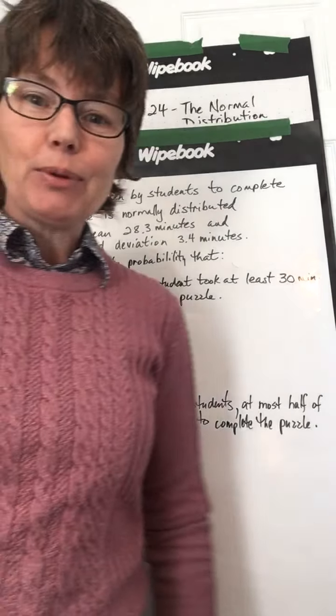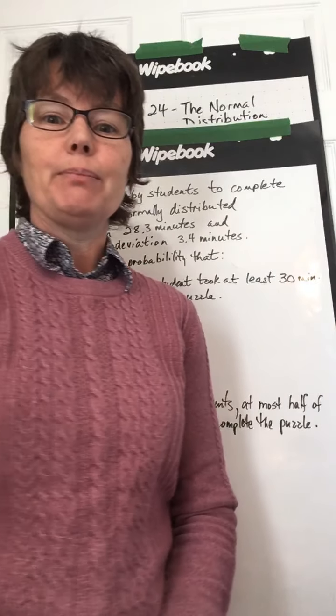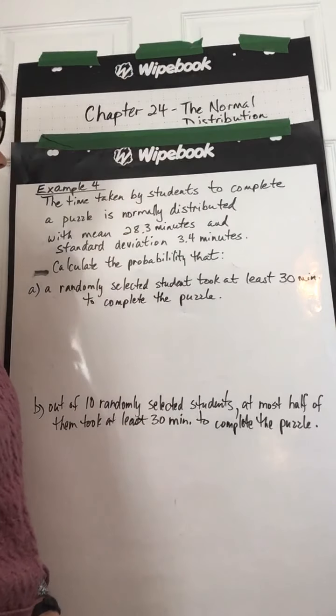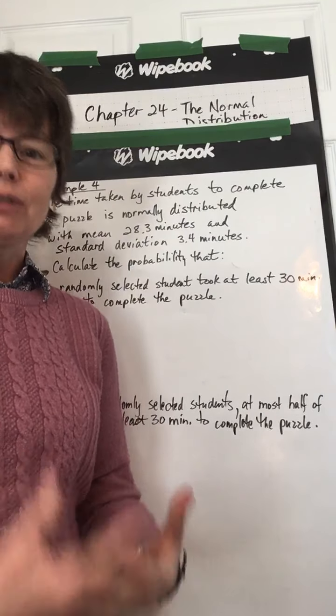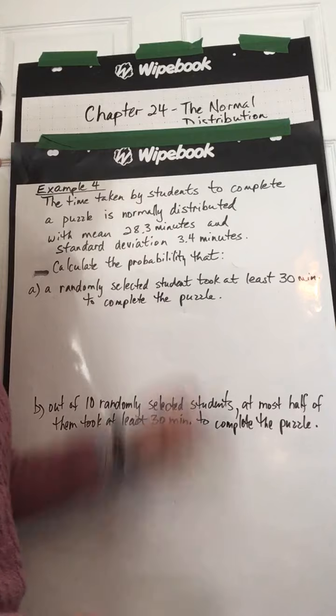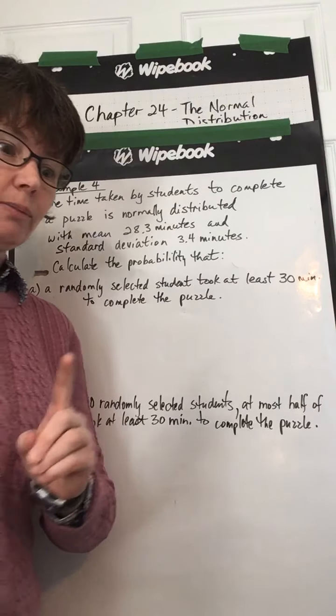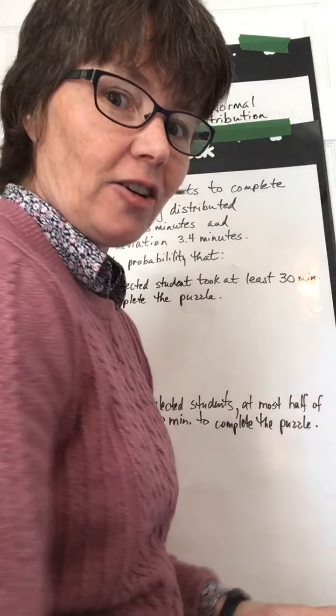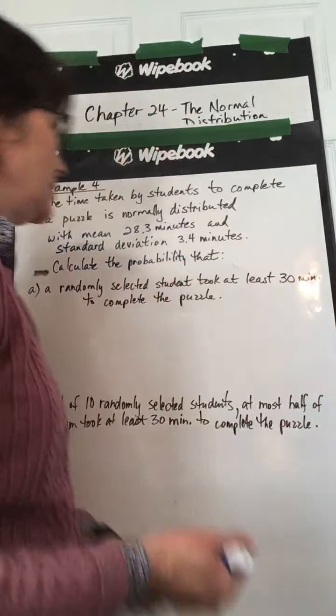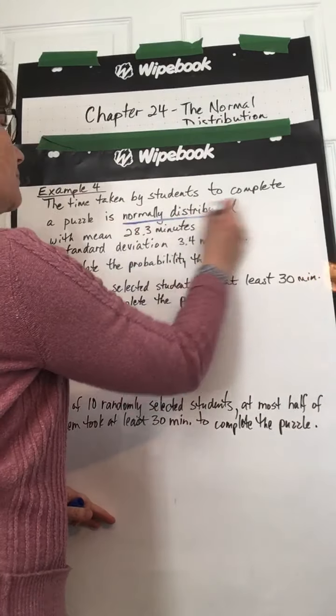Here we go with the last example from 24B, example number 4. So we've got, we're dealing with normal distribution still, we're using the calculator, the TI-Inspire. Okay, so the time taken by students to complete a puzzle is normally distributed. Ha ha, there is our clue. Normally distributed.